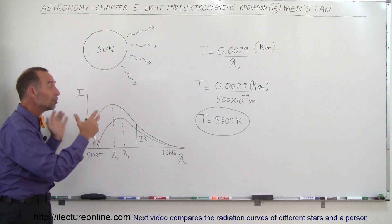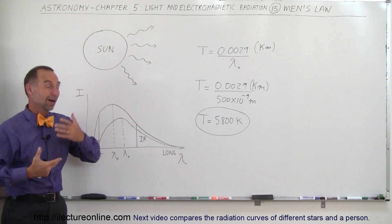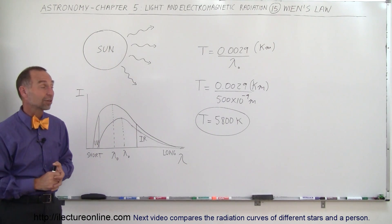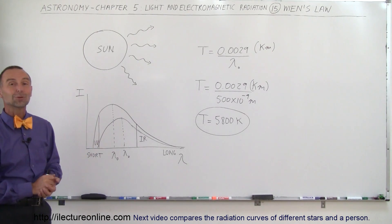But in astronomy this is extremely useful because now all we have to do is measure the radiation from any object, a planet, a star, you name it, and from that we can figure out what the temperature of that object is. It's really, really handy in astronomy and very simple to do with Wien's Law.